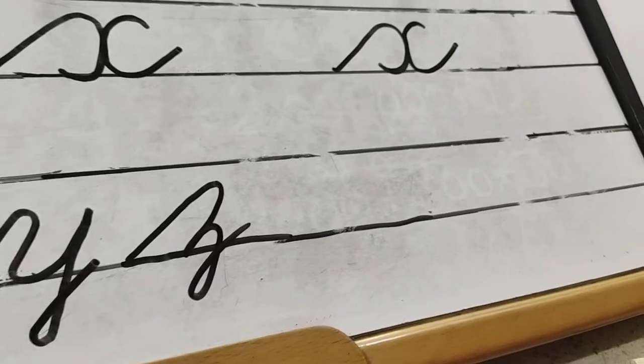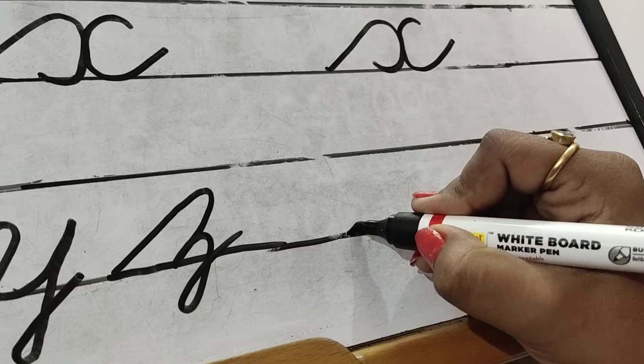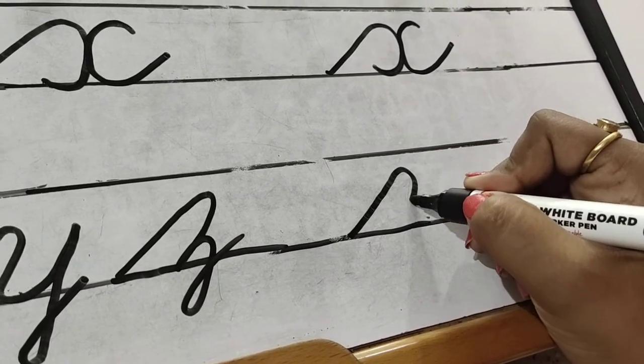Now how to make Z. Z banane ke liye, jaise humne X banaya tha, pehle to hum X ki tarah, lower line touch karenge, upper direction mein jayenge, isi ko curve dete hain, niche touch karenge.